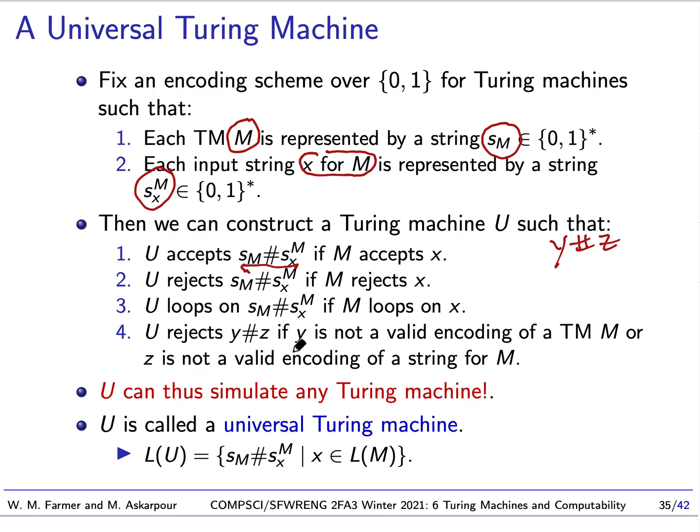And it will reject that string when M rejects X. And it will loop on that string when M loops on X. So U simulates exactly what M would do. So if U is running on this string, it will simulate exactly what M will do on X. And if we give it a string YZ, where Z is not a valid encoding of a string, then it will reject. So this is what U does. And we can construct such a Turing machine U. And so this Turing machine can simulate any other Turing machine.